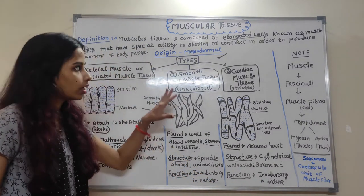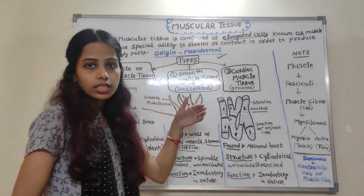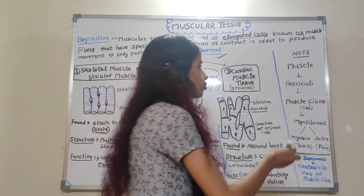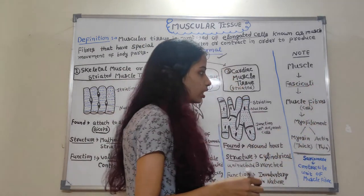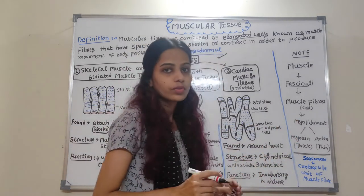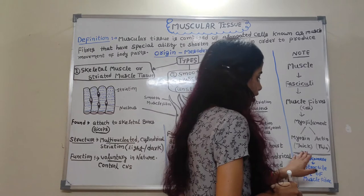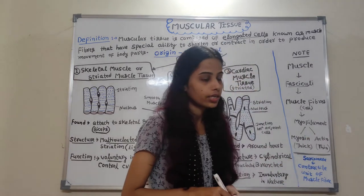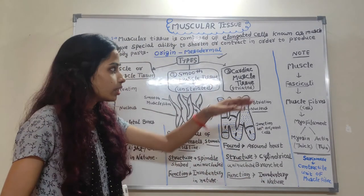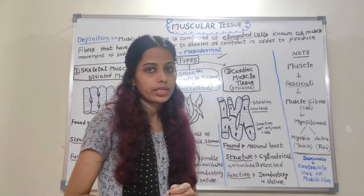As an extra note about muscular tissue: muscles form fasciculi, which contain muscle fibers or cells that form myofilaments. Myofilaments are divided into myosin, which is thick, and actin, which is thin filament. The sarcomere is the contractile unit of muscle fiber. We will see all these things in detail in the topic of locomotion and movement.